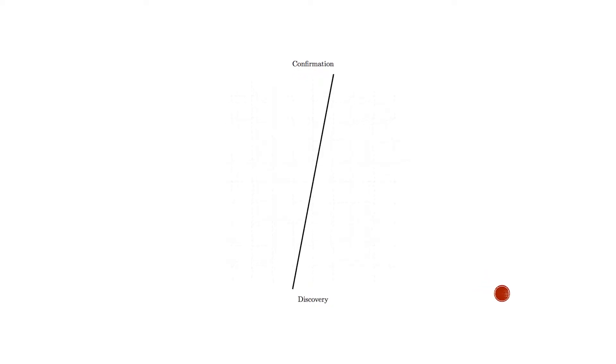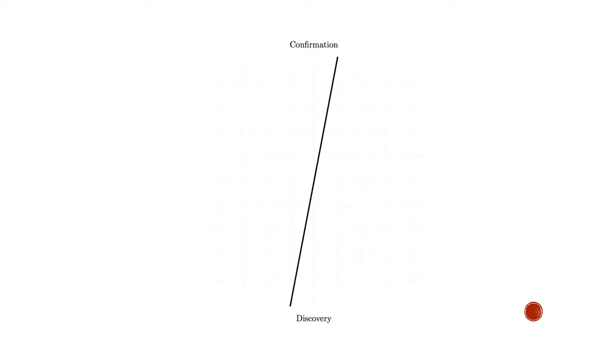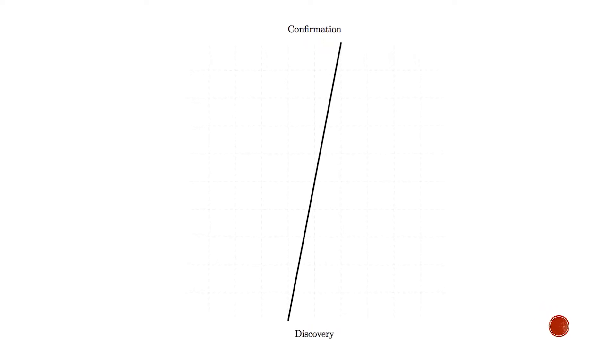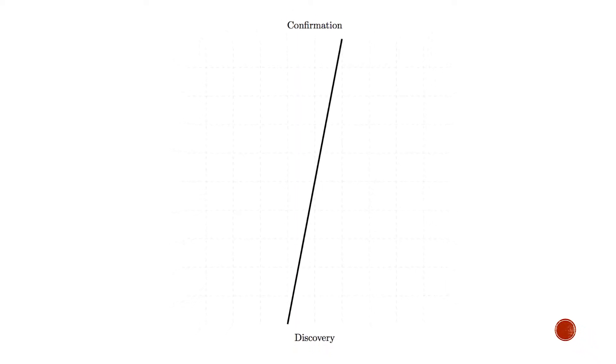The first dimension is confirmation at one end of the spectrum versus discovery at the other. Sometimes you are trying to confirm something you already know or suspect; other times you're trying to discover something new. This is a continuum — you can fall anywhere along it. If you're on the confirmation side, you're playing a game of chance and computing the probability of something happening exactly as it happened.